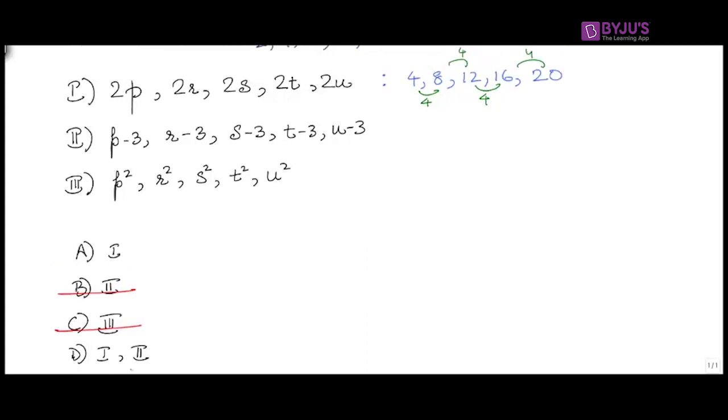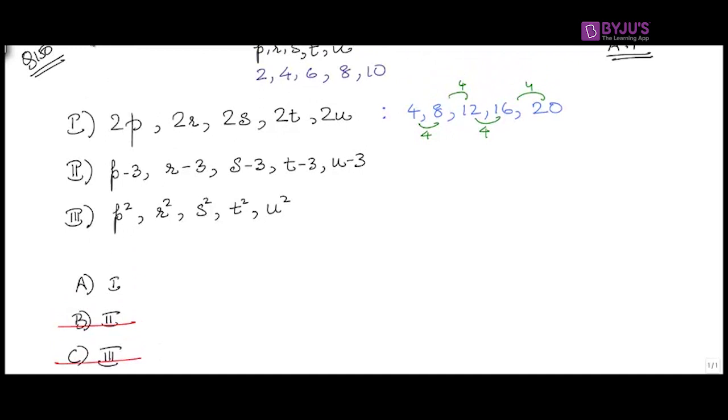Let's have a look at the second statement. P minus 3 will give you minus 1. 4 minus 3 is 1. 6 minus 3 is 3. 8 minus 3 is 5, and 10 minus 3 is 7.